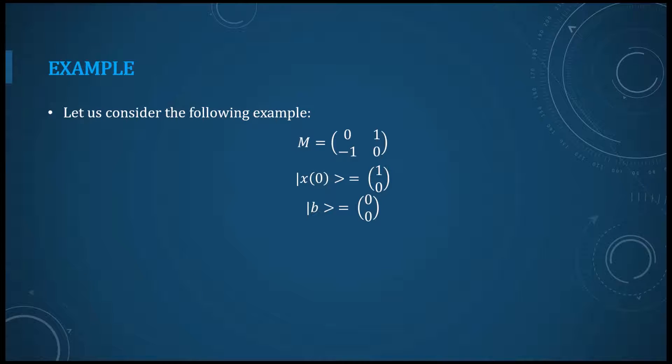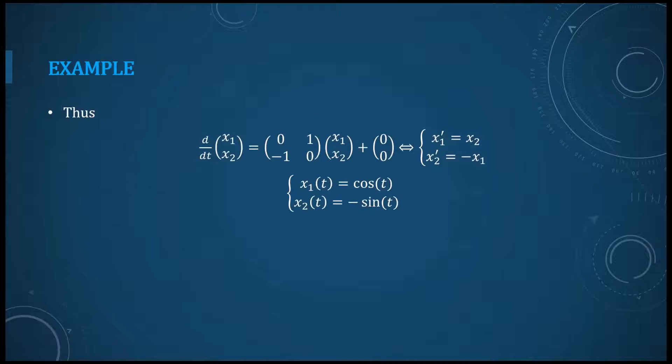But let us consider a simple example here. If we take the matrix M like this and those vectors like this—the quantum state x zero as being one, one, zero and also the quantum state b as being zero, zero—then we get our problem like this, which can be written like this also.